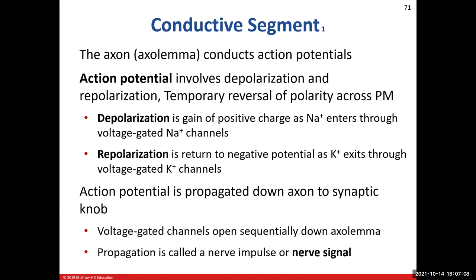The conductive segment is like our wire that conducts our signal from point A, the axon hillock, all the way down to point B, the transmissive segment. When talking about the axon, we focus on what's happening at the plasma membrane of the axon — the axolemma. Think of the conductive segment as the area of the cell in which action potentials travel. An action potential is when we depolarize and then repolarize the plasma membrane.